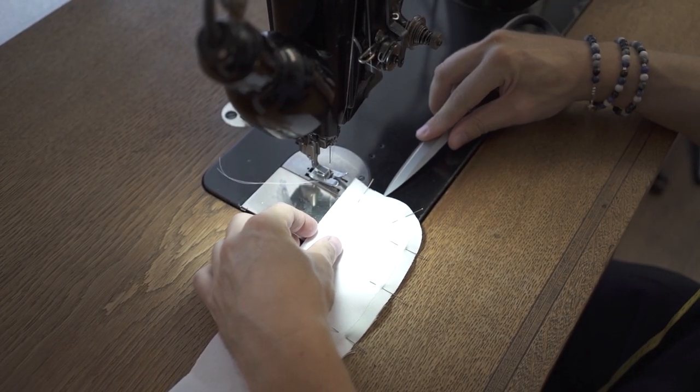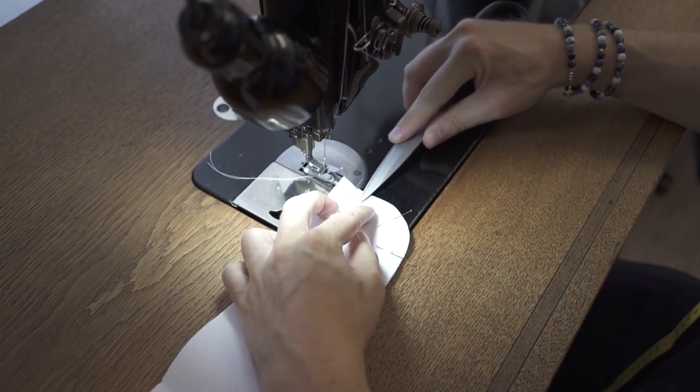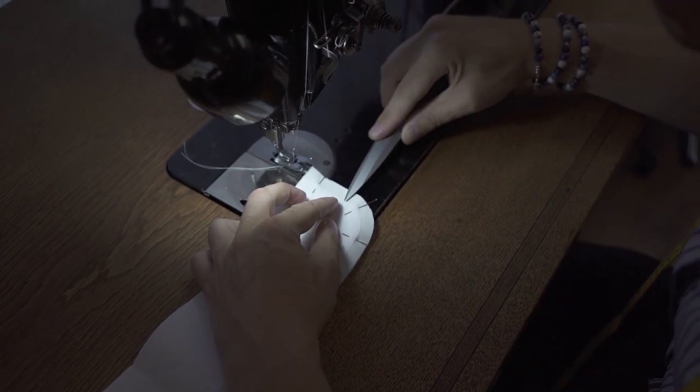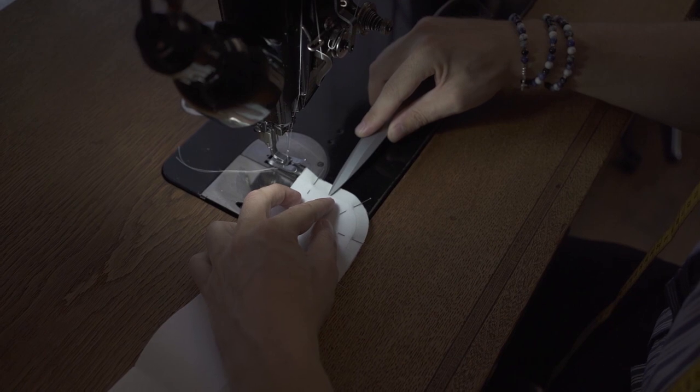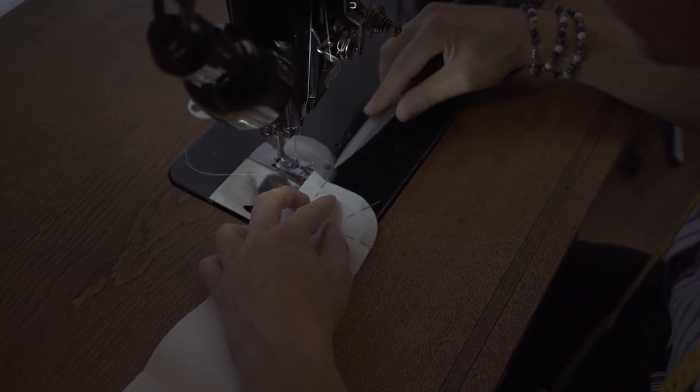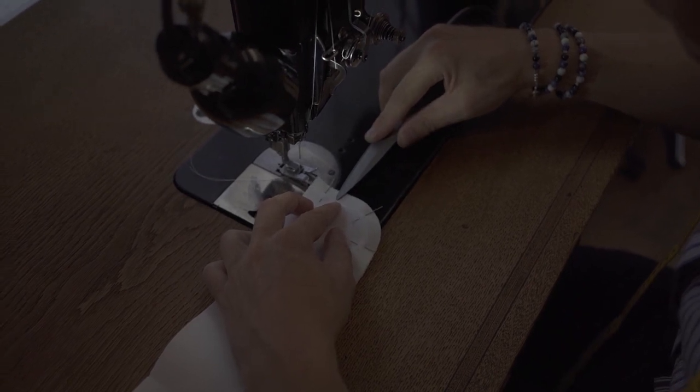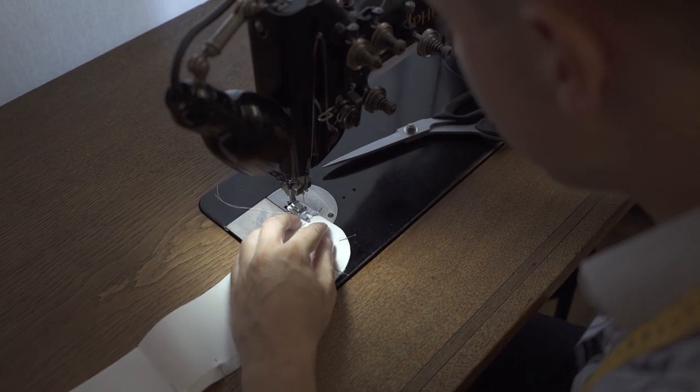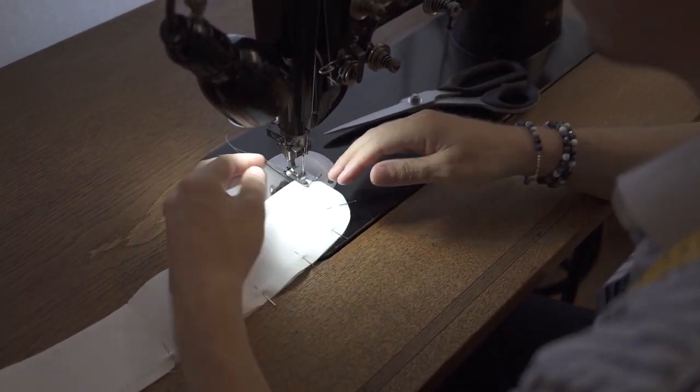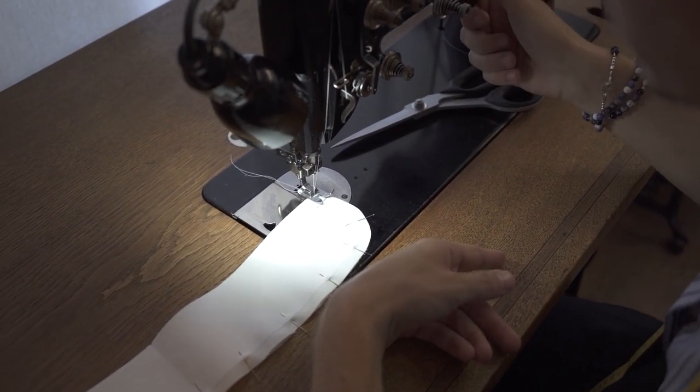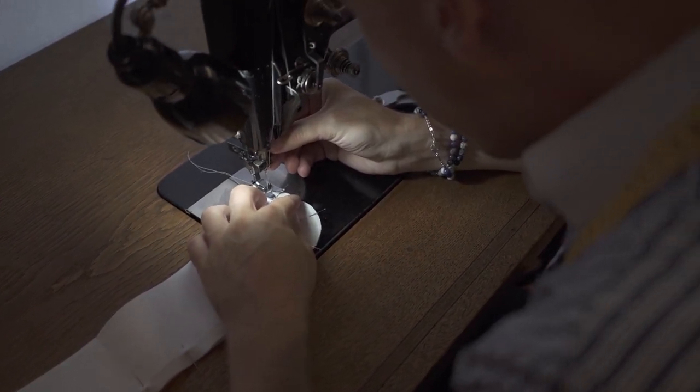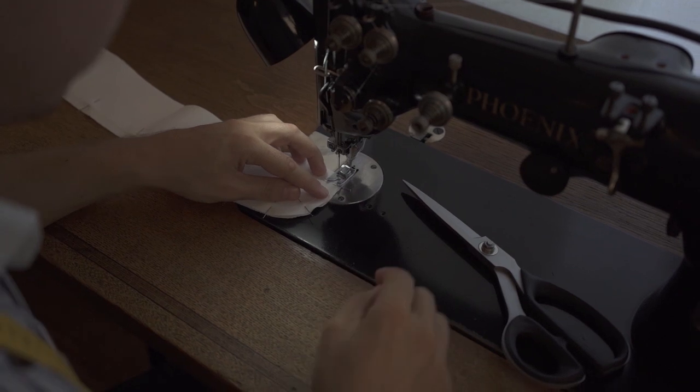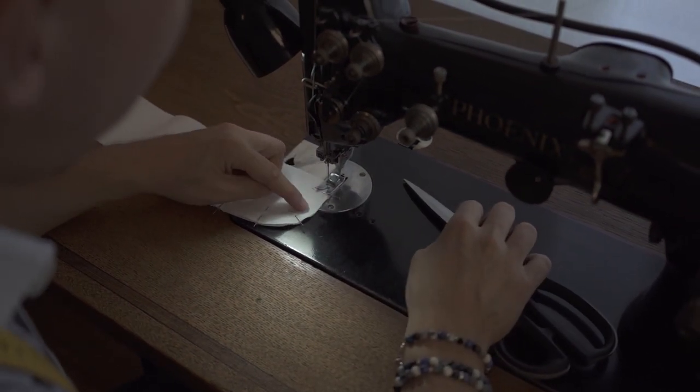Important is now, we have one centimeter of seam allowance, but if we sew in exactly one centimeter, then we would be extremely close to this edge of the interfacing here. That would make turning later considerably more difficult. And therefore, we should add another millimeter of allowance, so that the fabric has still room to get around the interfacing. That means I adjust the needle of my sewing machine now. With modern sewing machines, you can adjust it even more precisely. Now I can sew along the foot of the sewing machine and automatically have enough distance to the interfacing.